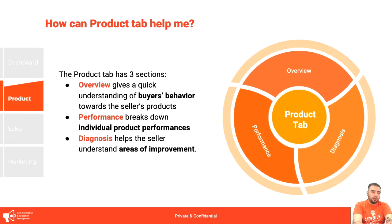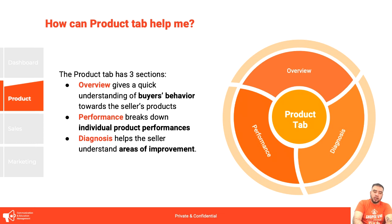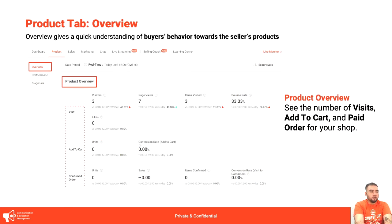In the product tab, you get a quick understanding of buyer behavior towards your products. Performance breaks down individual product performances so you can find your best-selling products. The diagnosis feature helps you understand areas of improvement — concerns like pricing, photo quality causing low views, and so on. In product overview, you can see the number of visits, add-to-cart, and paid orders. Compare add-to-cart versus actual checkouts — if many add to cart but don't check out, you may need to work on pricing or product details.